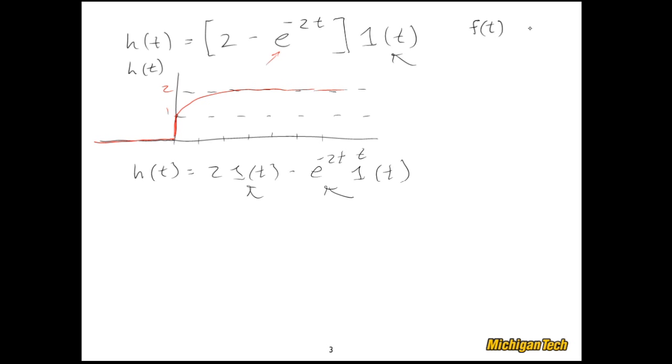We had f of t and f of s, just as a reminder. We had the Dirac delta function. I won't rewrite that one. We had the step, which is 1 over s. And we had e to the negative at, which was 1 over s plus a.